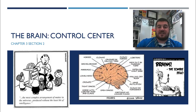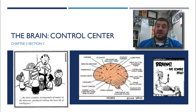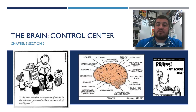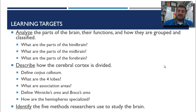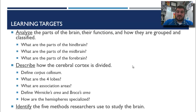Hi, and welcome back to Psychology with me, Mr. Snyder. Today we are going to discuss the control center of our entire body, the brain. Our learning targets: we'll talk about the parts of the brain, their functions, how we group and classify them, then we'll move on to discuss specifically the cerebral cortex, and lastly, we'll talk about the five methods that we use to research the brain.